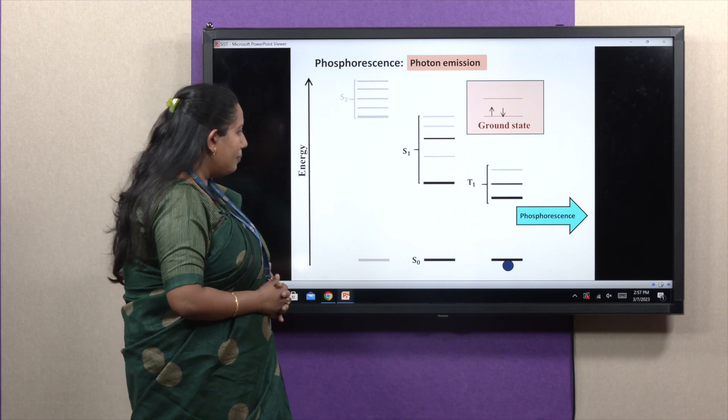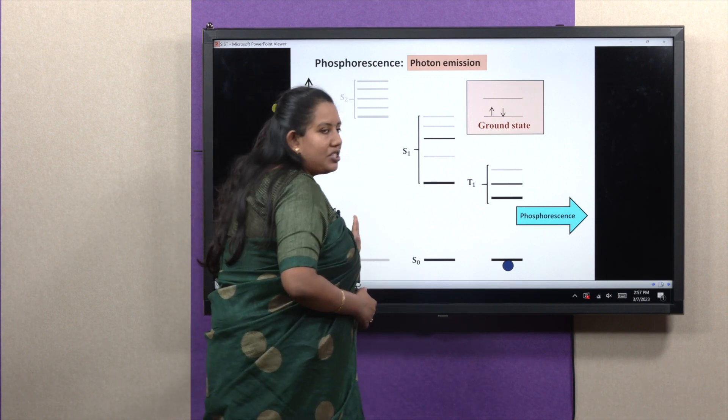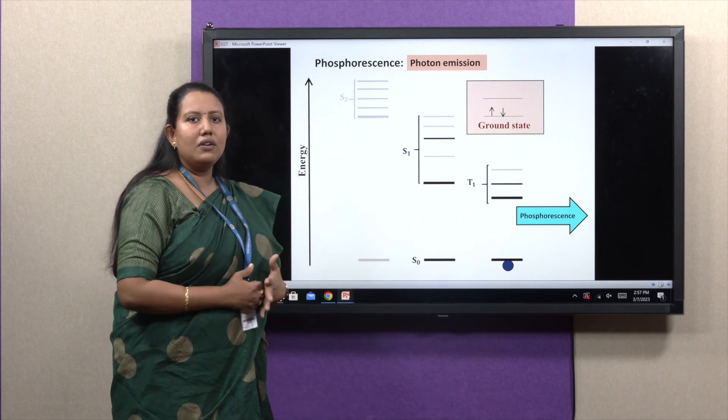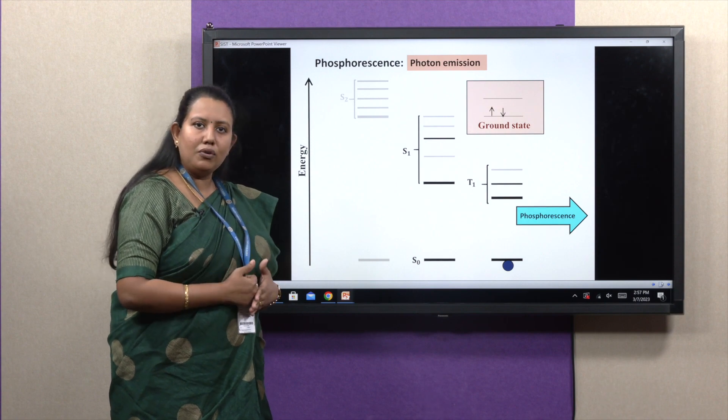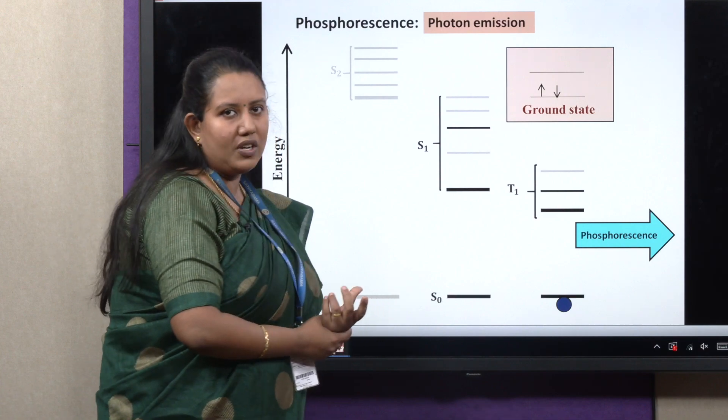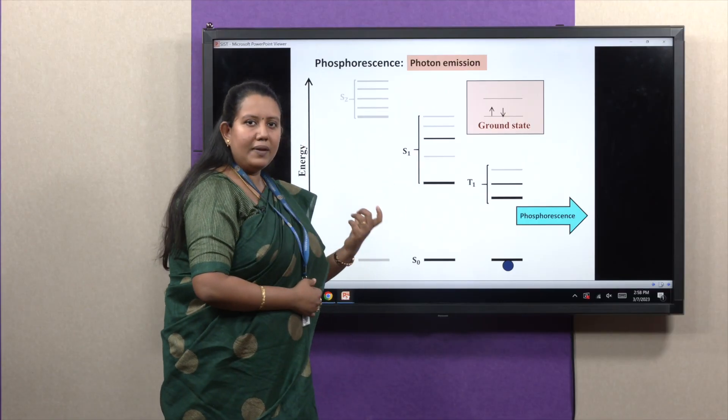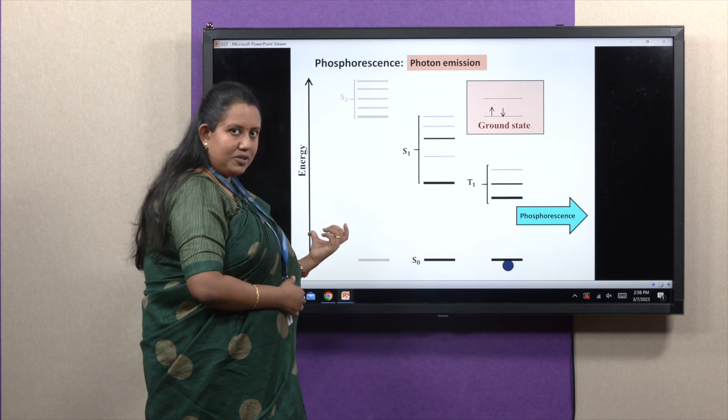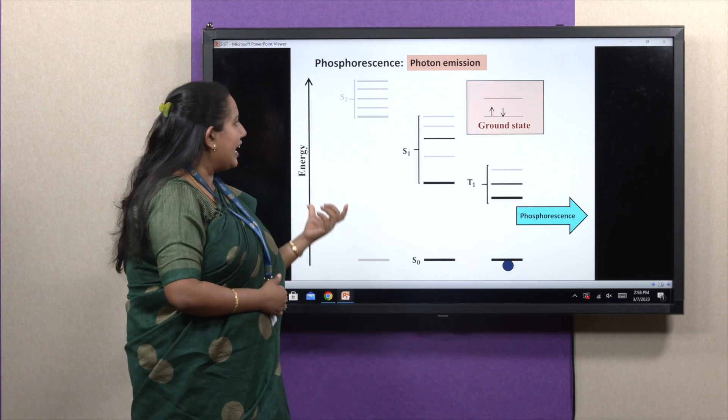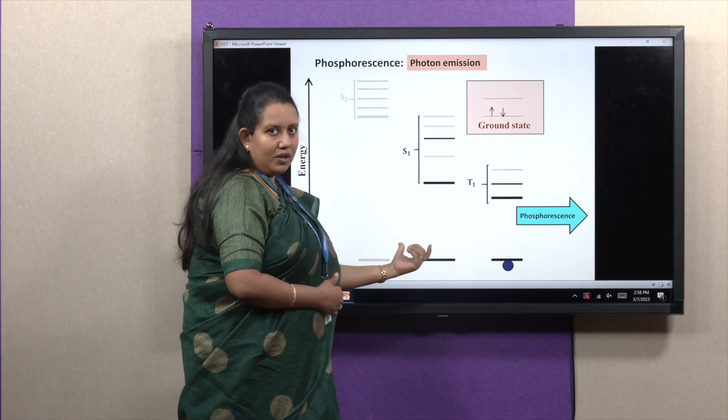Now, here two important things to remember: the absorption energy will always be higher than fluorescence energy. We can call this fluorescence and phosphorescence emission. Emission wavelength will be higher compared to absorbance, and vice versa, energy of absorption will be higher compared to fluorescence. The wavelength difference between absorption and emission is called Stokes shift.